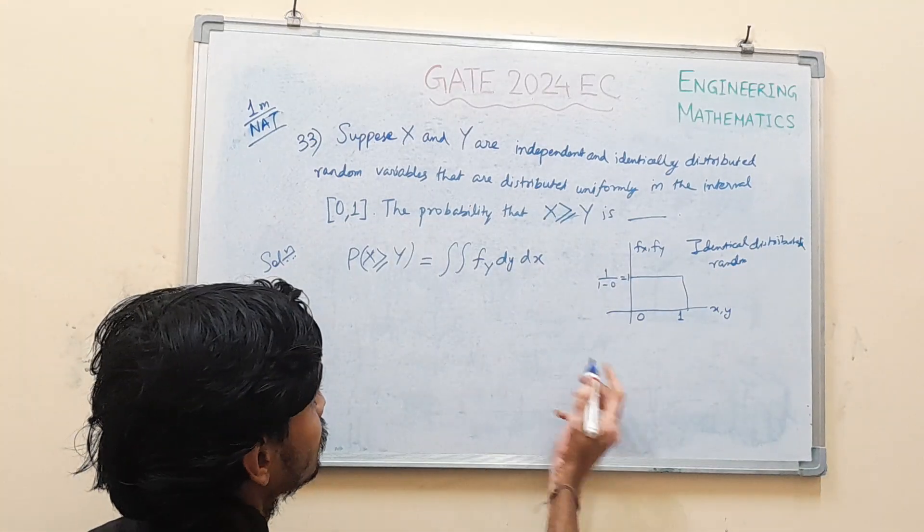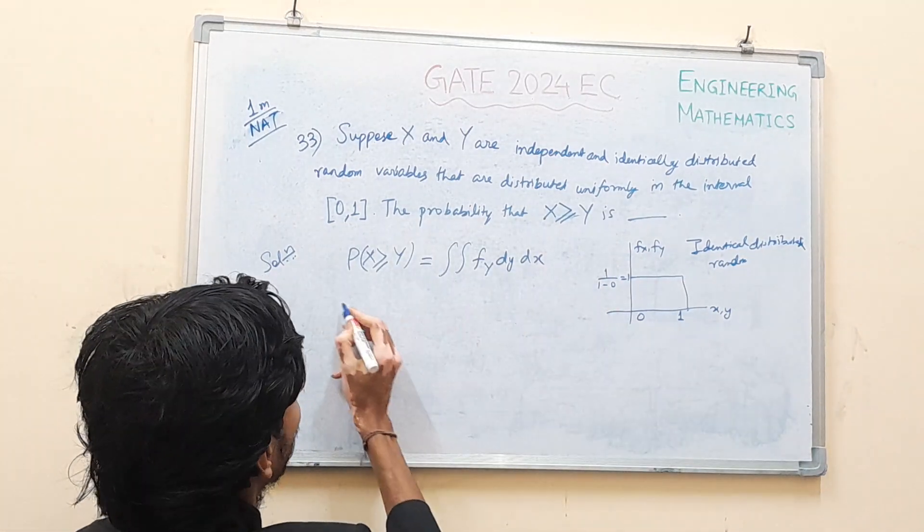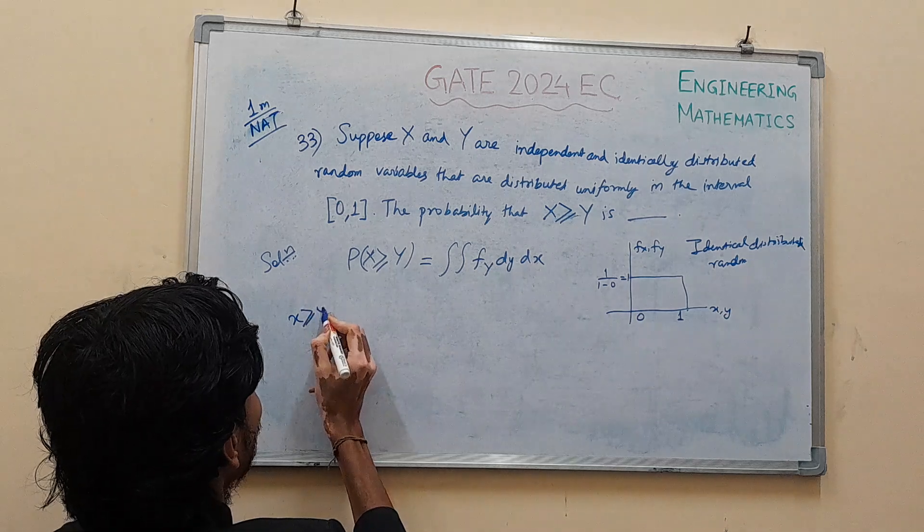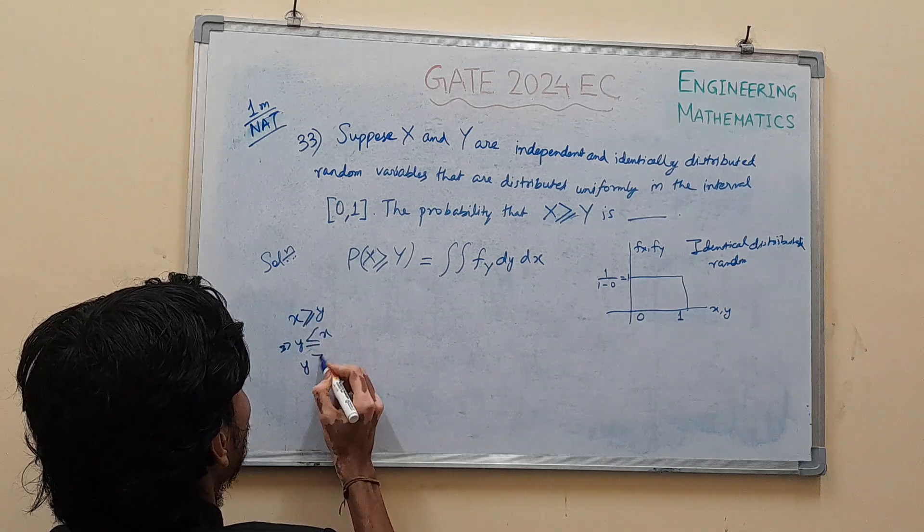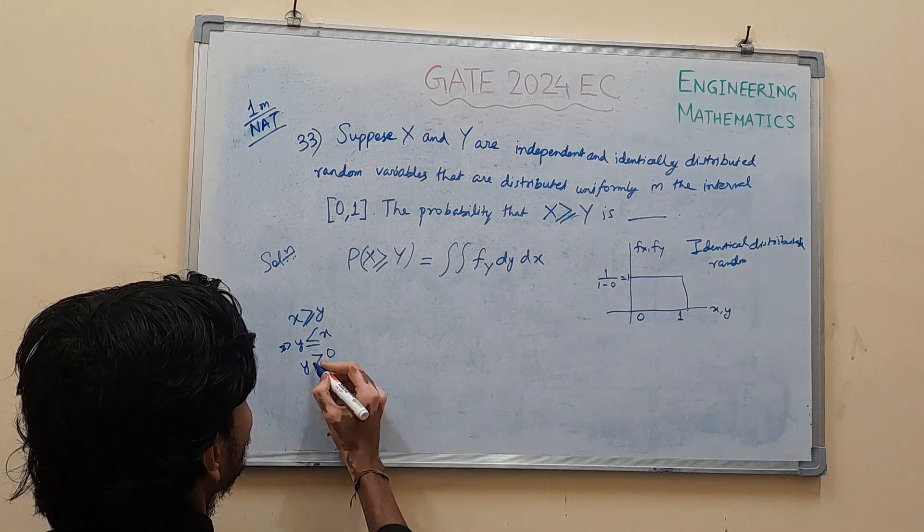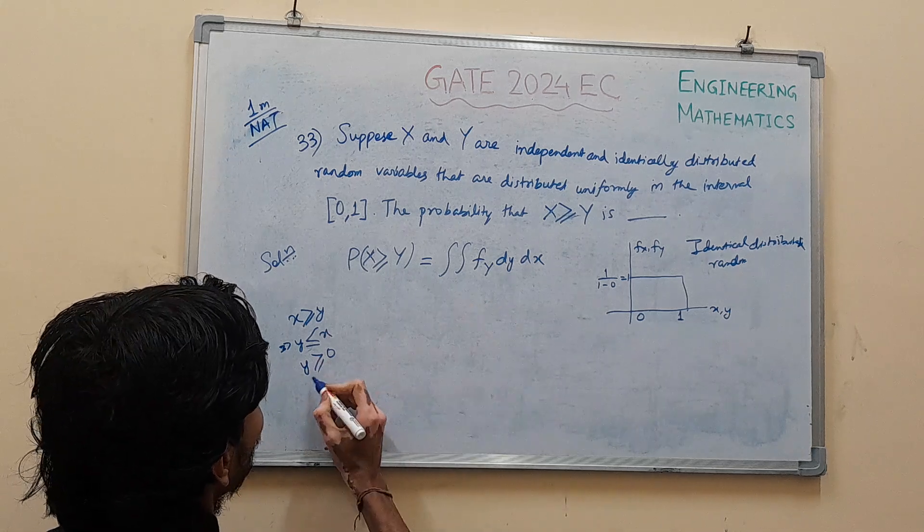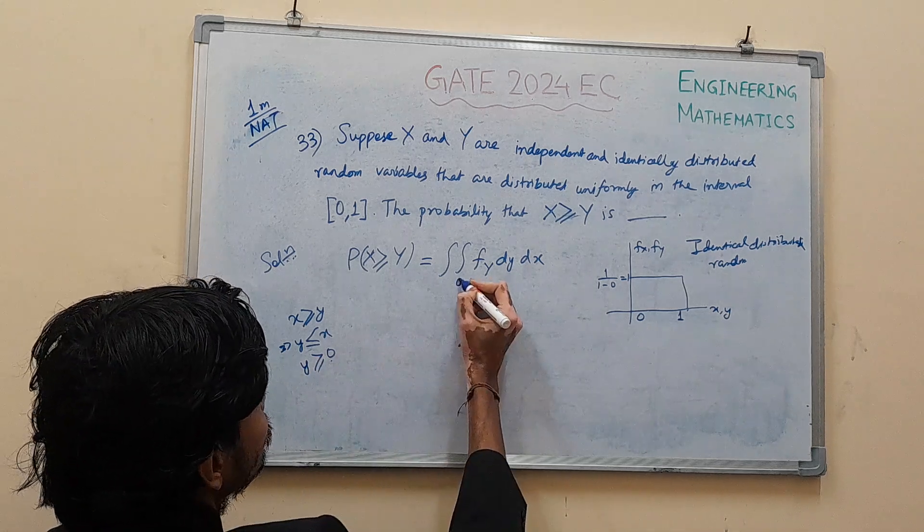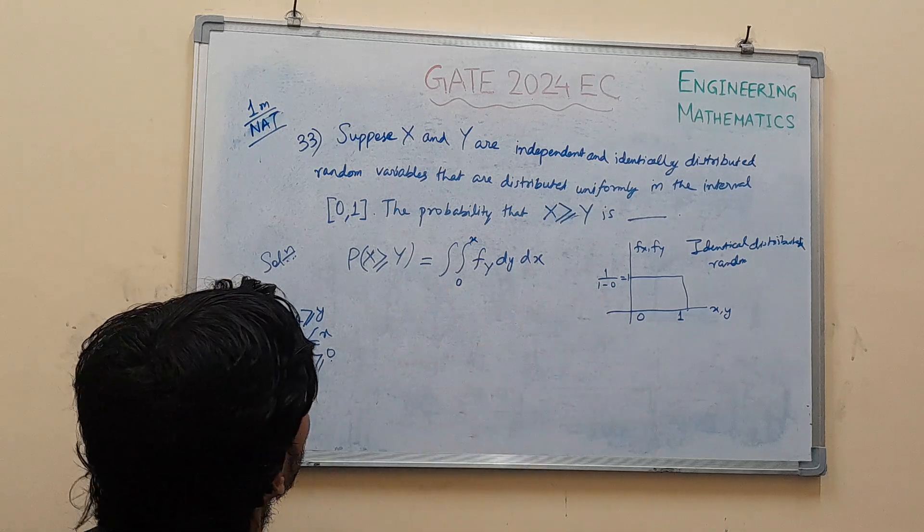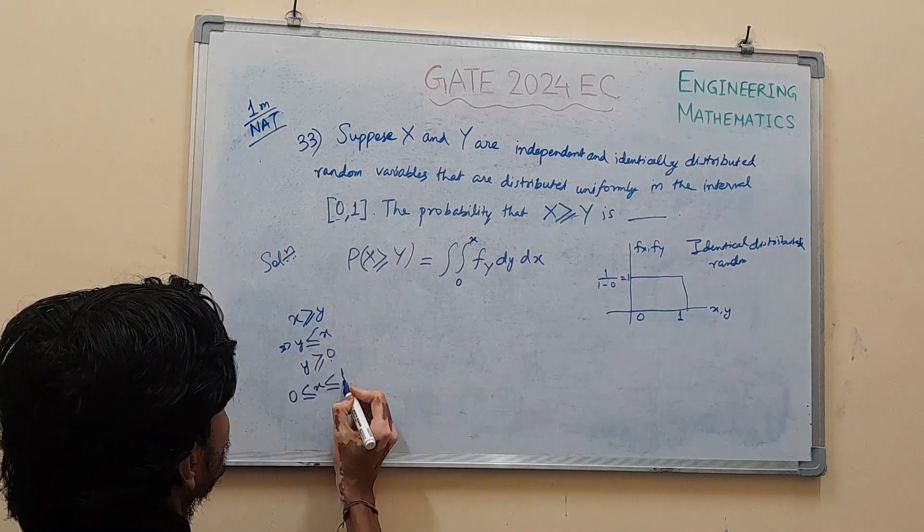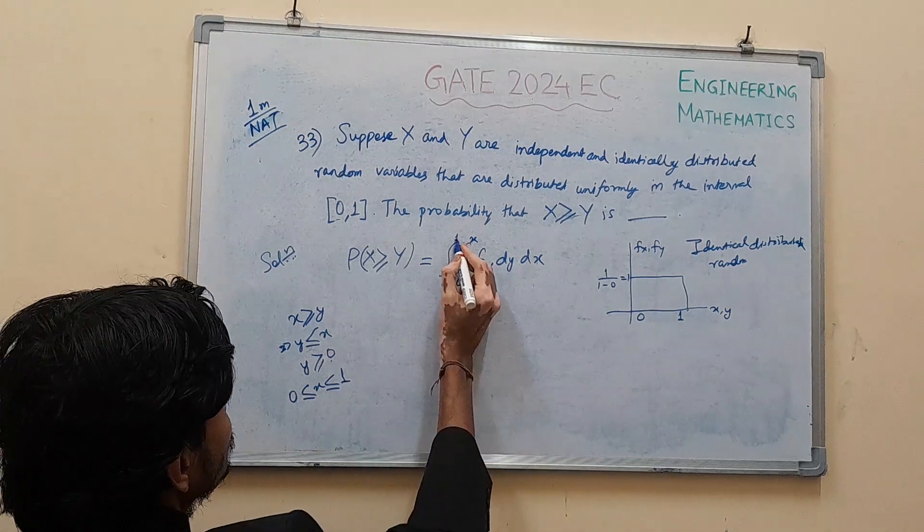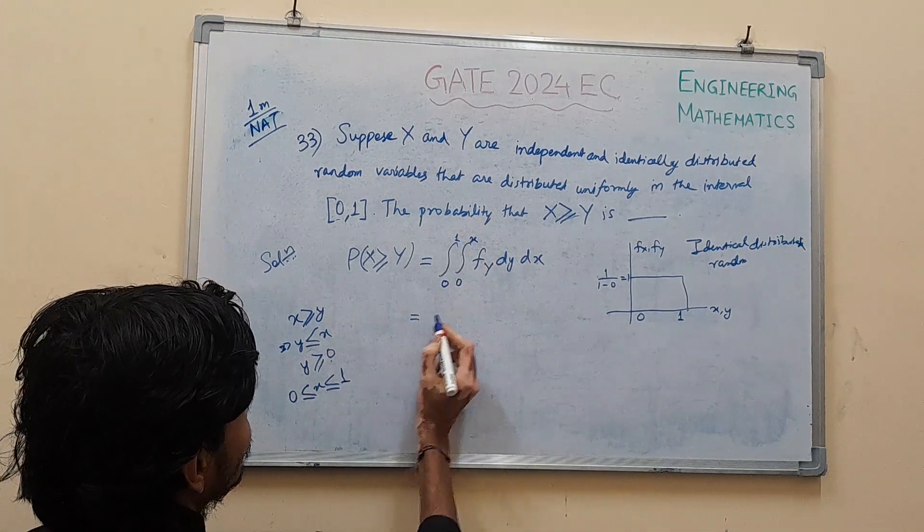The limits of y will be what? Since X greater than equal to Y, so Y is less than equal to X. Also Y is greater than 0. Limits of y will be 0 to x, and the limits of x will be 0 to 1. So I'm putting the limits here.